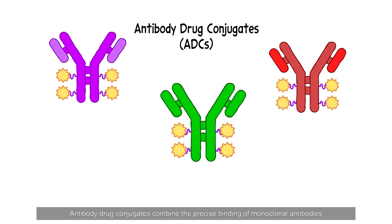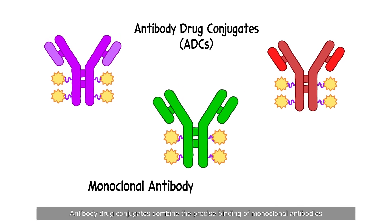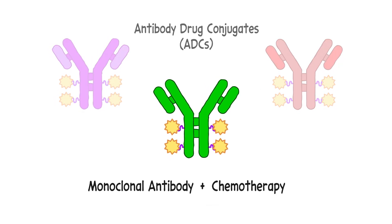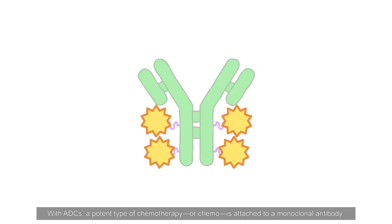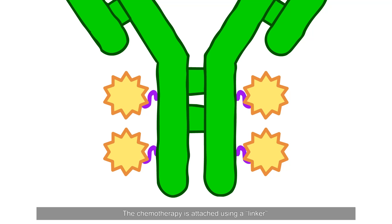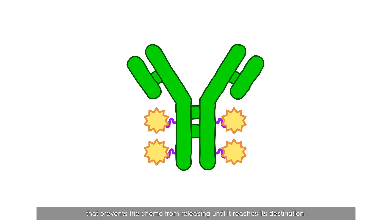Antibody Drug Conjugates combine the precise binding of monoclonal antibodies with the cancer-killing ability of chemotherapy. With ADCs, a potent type of chemotherapy is attached to a monoclonal antibody that helps direct the chemo to the tumor cell. The chemotherapy is attached using a linker that prevents the chemo from releasing until it reaches its destination.